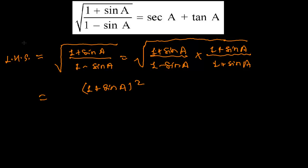And here 1 minus sine A and 1 plus sine A, it is you know A minus B times A plus B, and this is the formula of A squared minus B squared. So here 1 minus sine and 1 plus sine A will be 1 squared, that is 1.